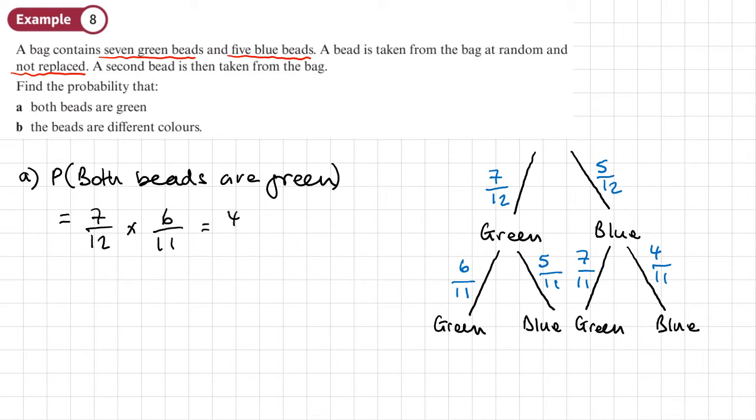That makes 42 over 132. And that simplifies to seven over 22. Then part B, the beads are different colors.